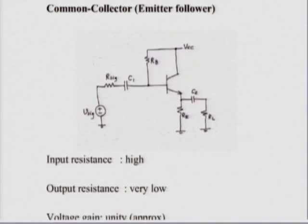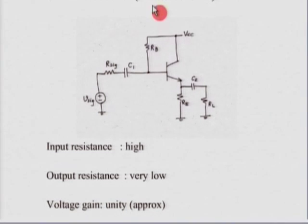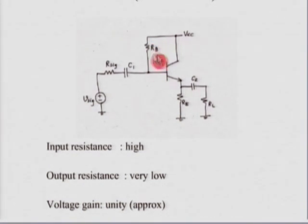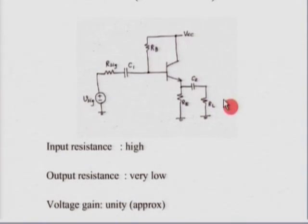Let us look at the common collector amplifier, which also has another name: the emitter follower. Looking at the circuit, the input is connected through a capacitor. We are not using the standard potential divider here, for a very important reason we will see shortly. You would choose a fairly high value of R_b. The output is taken from the emitter, through a coupling capacitor to the load R_l. Occasionally R_e used for biasing itself serves as the load resistance.